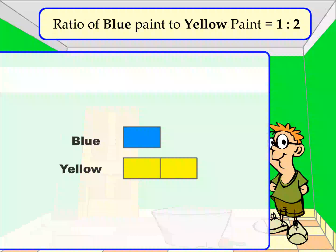We generally draw models of the ratio in order to understand and solve problems easily. Since the ratio of the blue and yellow paint is 1 is to 2, we can draw a model of the blue and yellow paints this way. Note that in this model, we represent the ratio 1 is to 2 by drawing one unit for the blue paint and two units for the yellow paint.